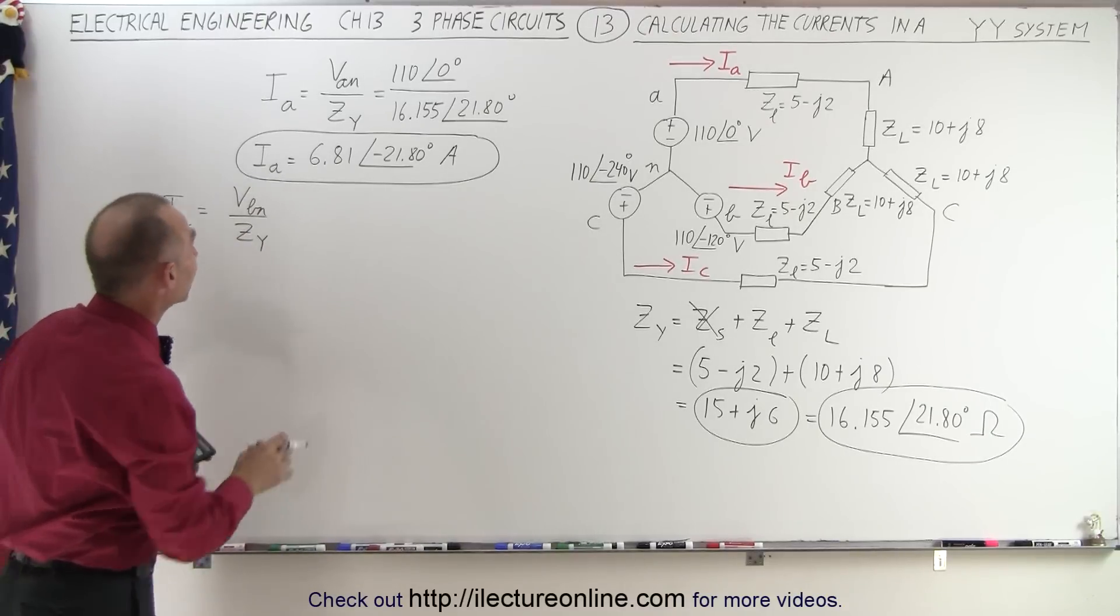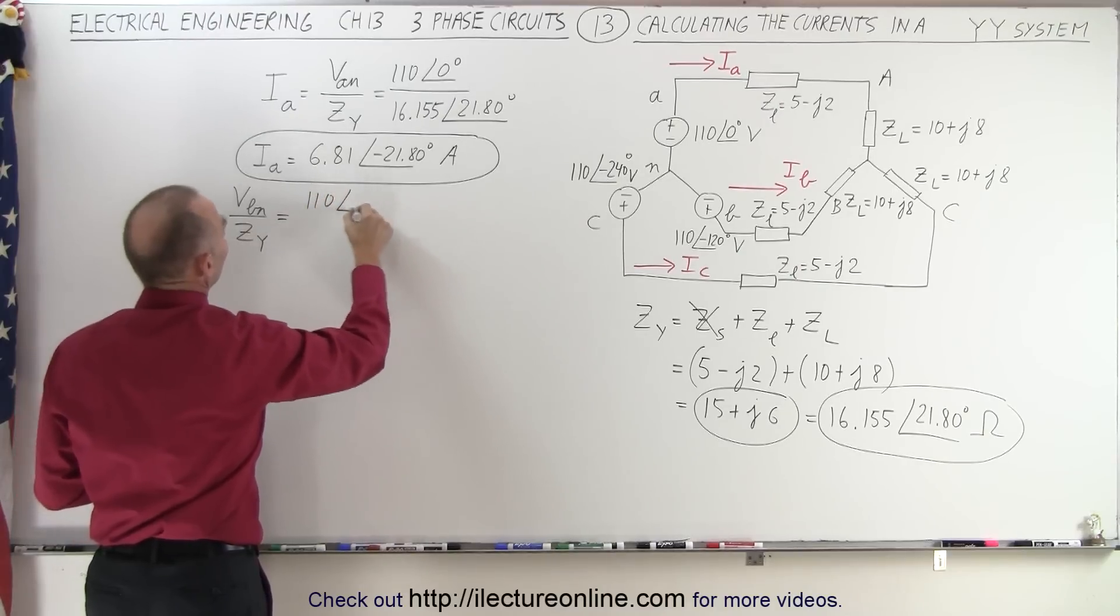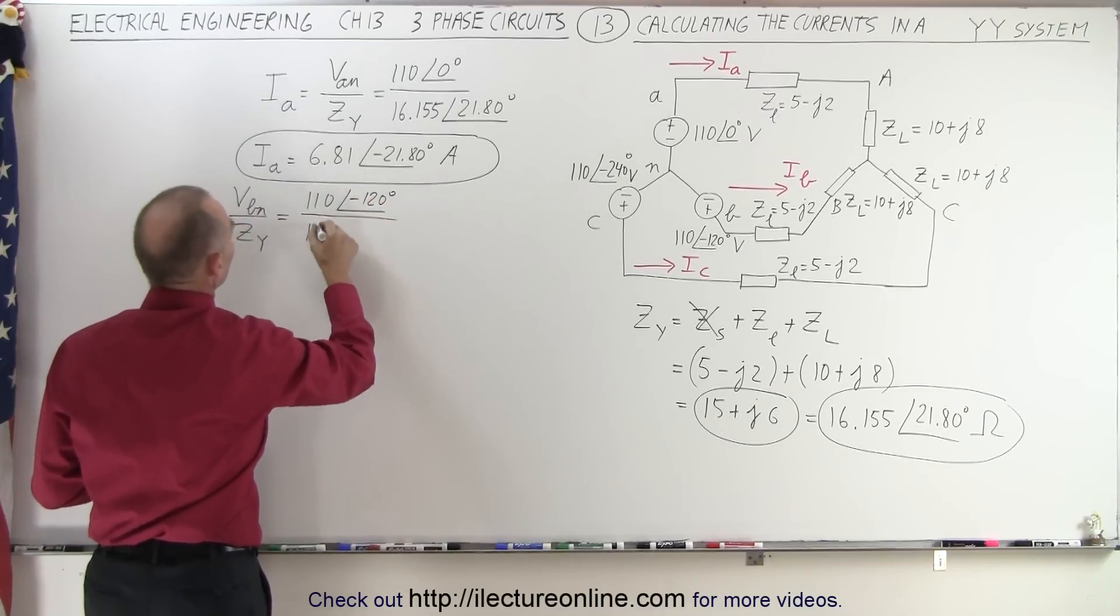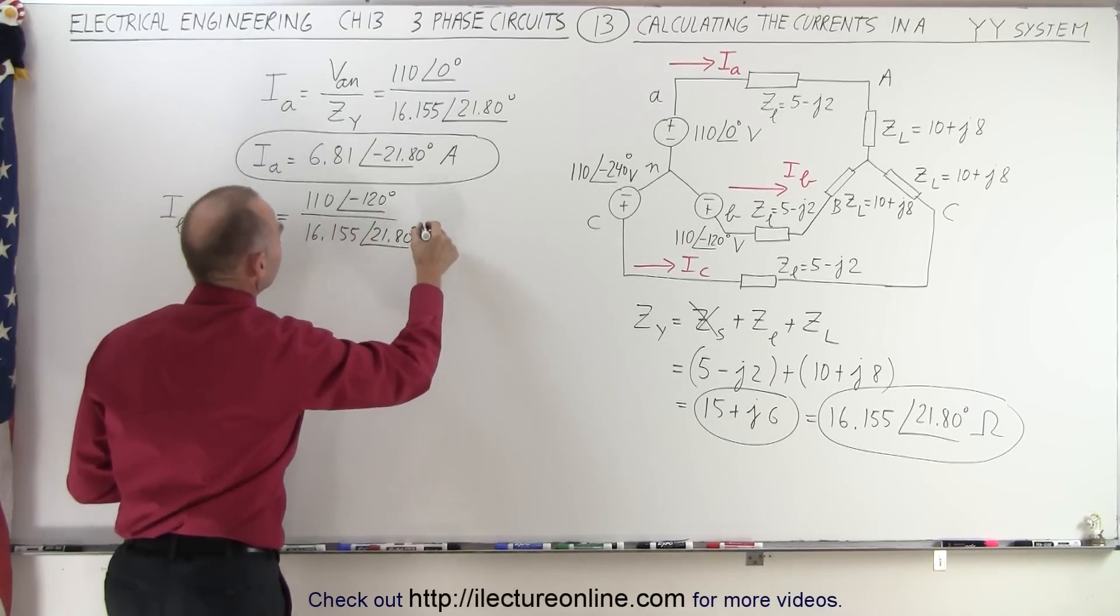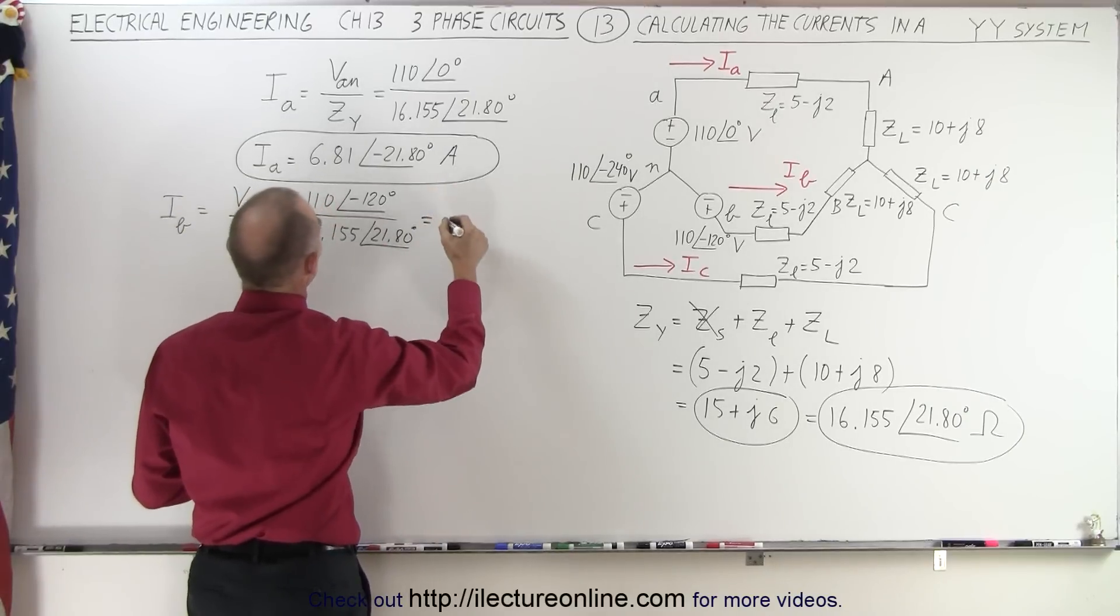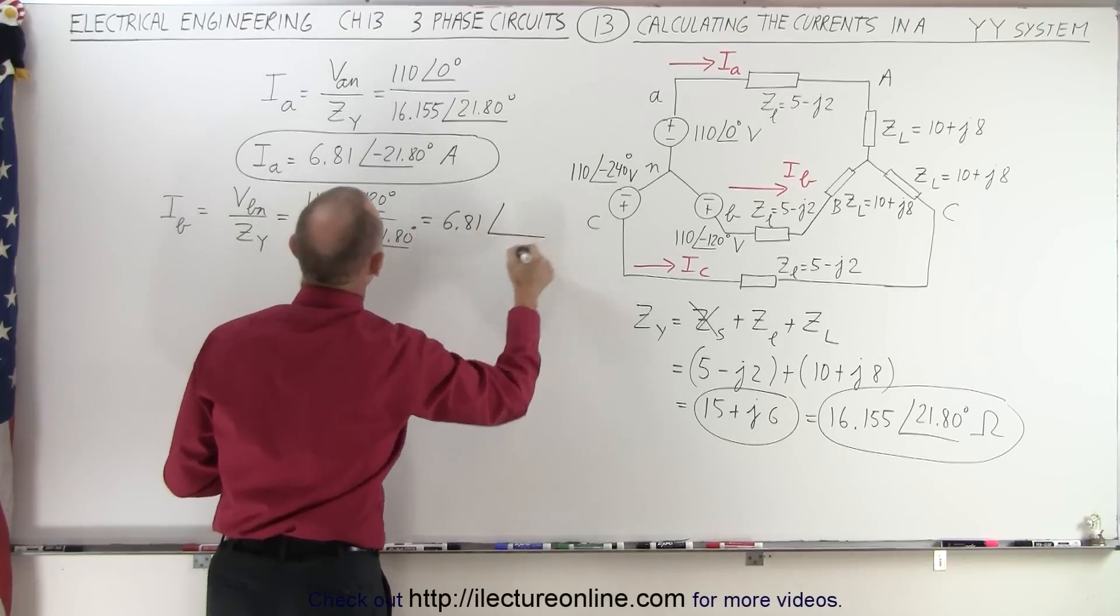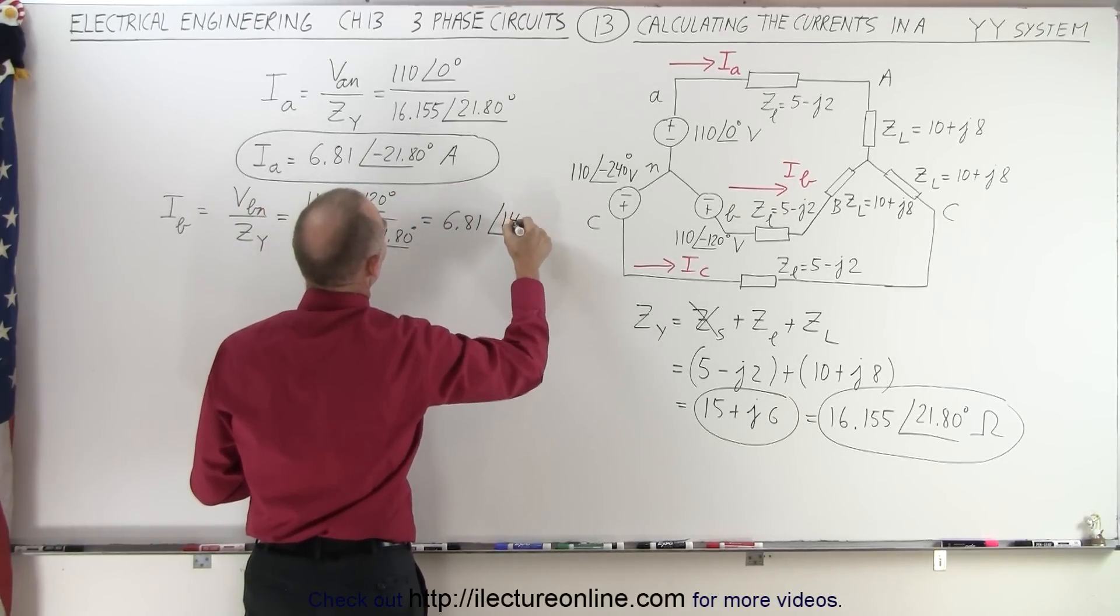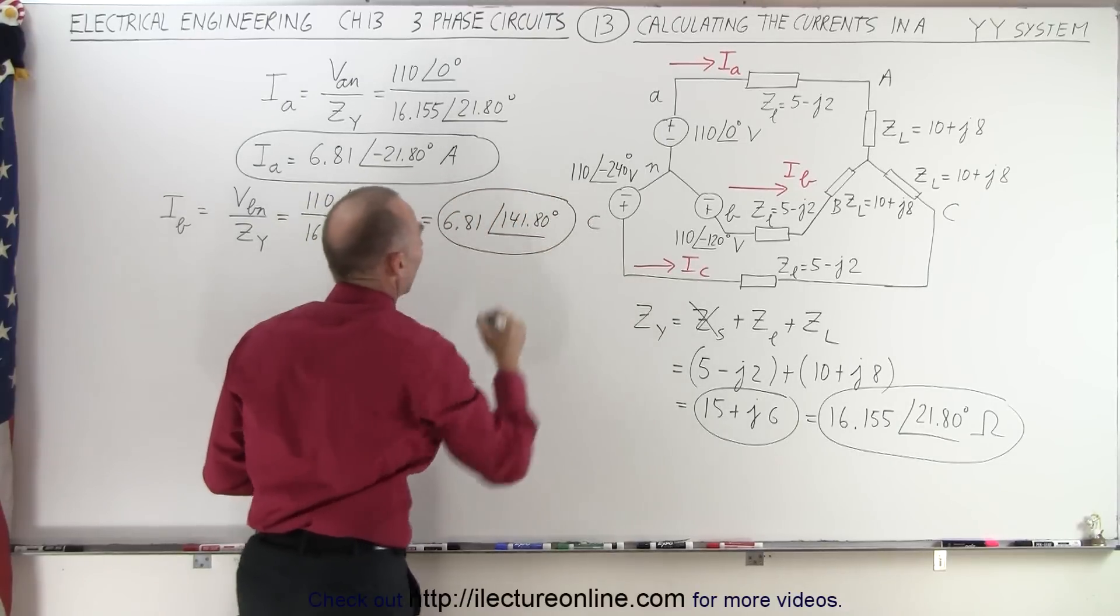all impedances are going to be exactly the same. But the voltages will be different because this one will be 110 volts at a phase angle of minus 120 degrees, divided by 16.155, with a phase angle of 21.80 degrees, which is equal to, the magnitude will be the same, 6.81, but the phase angle will be minus 120, which is minus 141.80 degrees. So this here will be current I sub B.